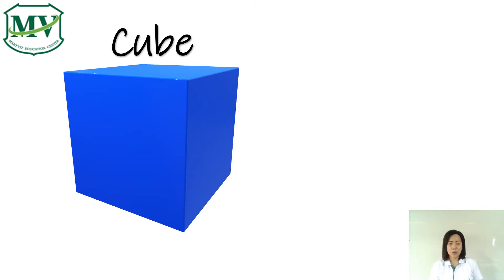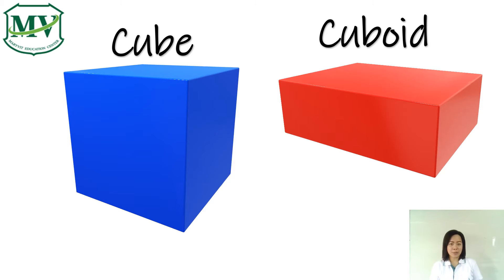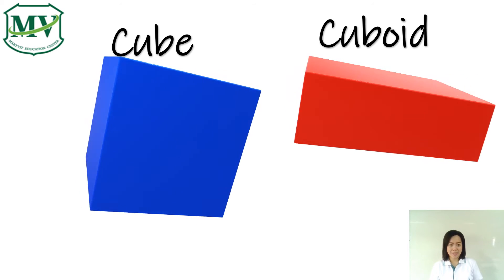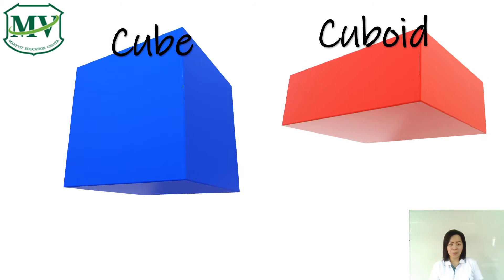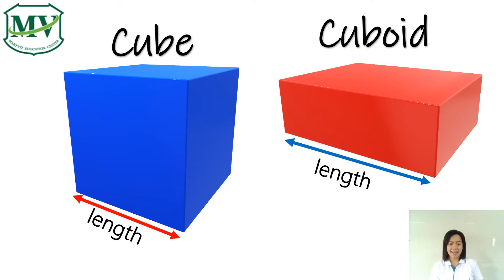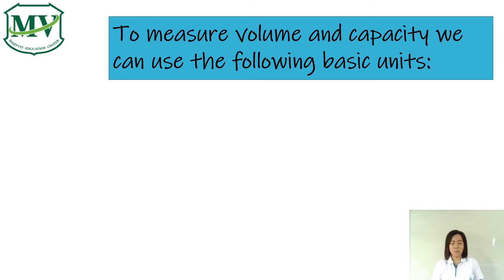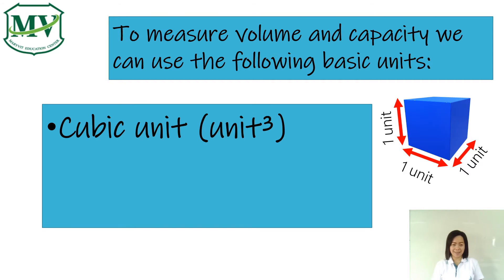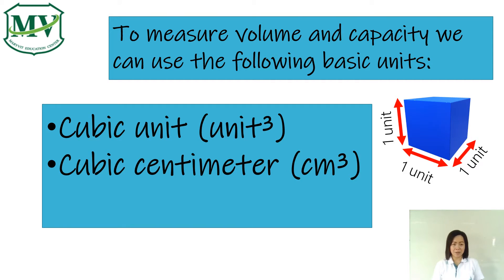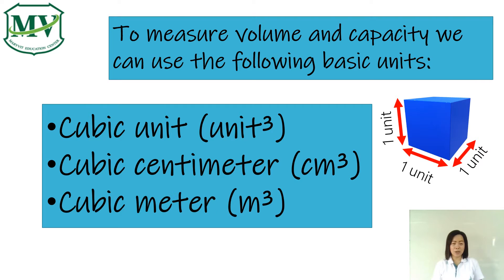Now let's get started. Cube and cuboid are 3D shapes. 3D shapes have three dimensions: length, width, and height. To measure volume and capacity, we can use the following basic units: cubic unit, cubic centimeter, or cubic meter.